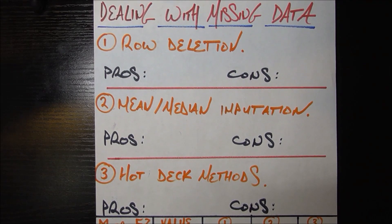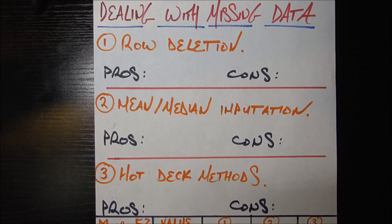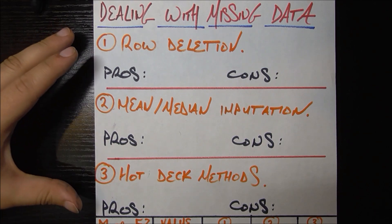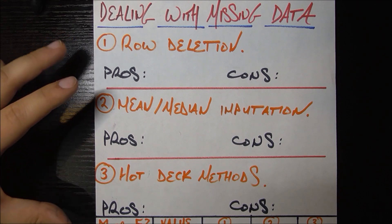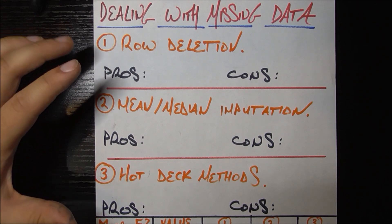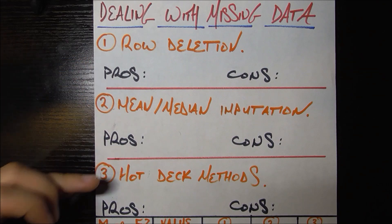In this video we're going to start talking about how to deal with missing data. Specifically, in this video we'll talk about three relatively easy ways to deal with missing data. In the next video we'll talk about a more complicated way which sometimes works a lot better, but it's important to understand these three fundamentals first.